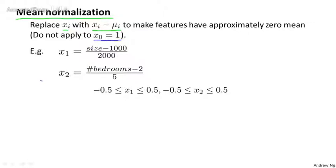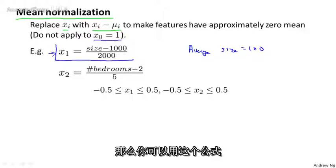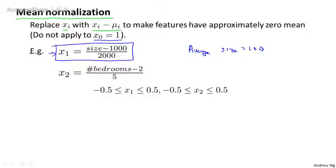But concretely, for other features, if the range of sizes of a house takes on values between 0 to 2000, and if the average size of a house is equal to 1,000, then you might use this formula: set the feature x1 to be (size - 1000) / 2000. And similarly...